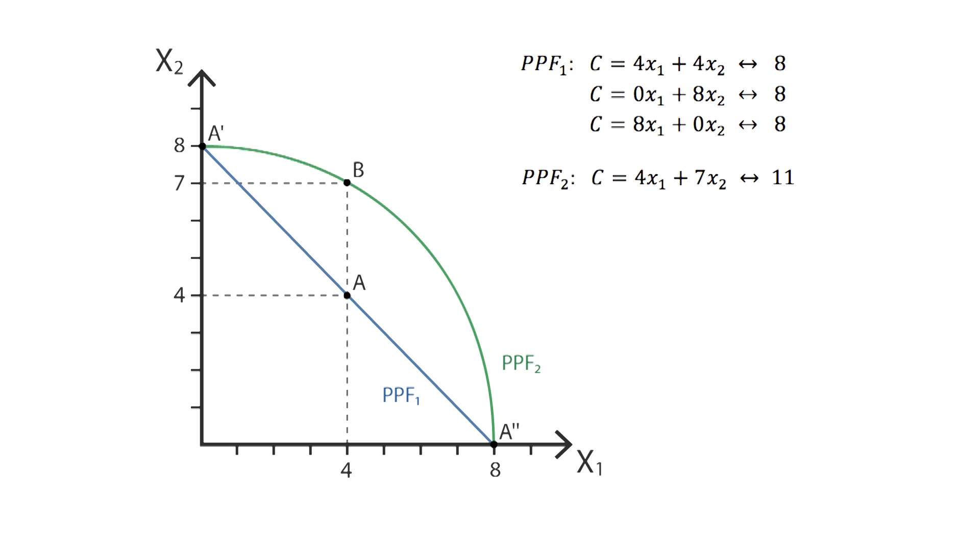Therefore, for the first production possibility frontier, producing x1 and x2 jointly rather than separately will have no effect on total average cost. However, for the second production possibility frontier, joint production will cost less than producing both goods separately.